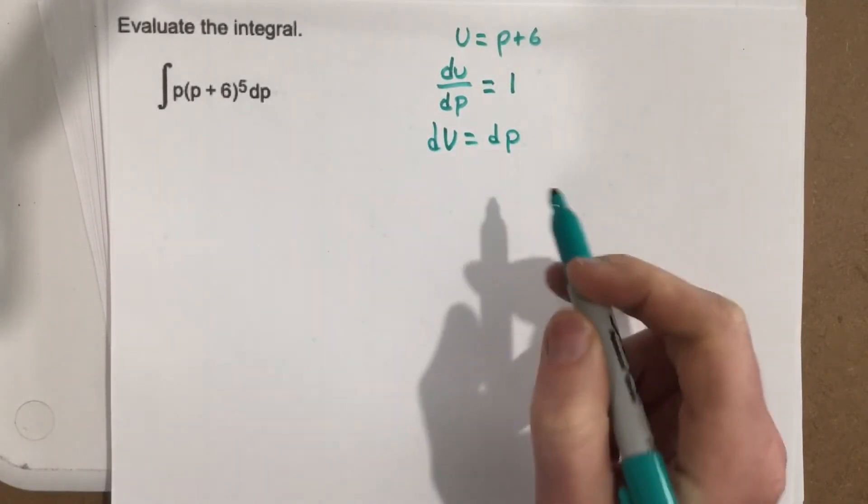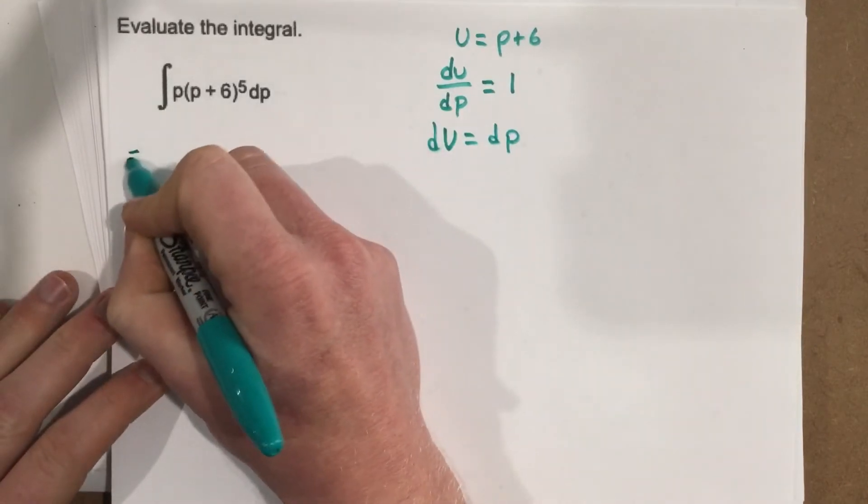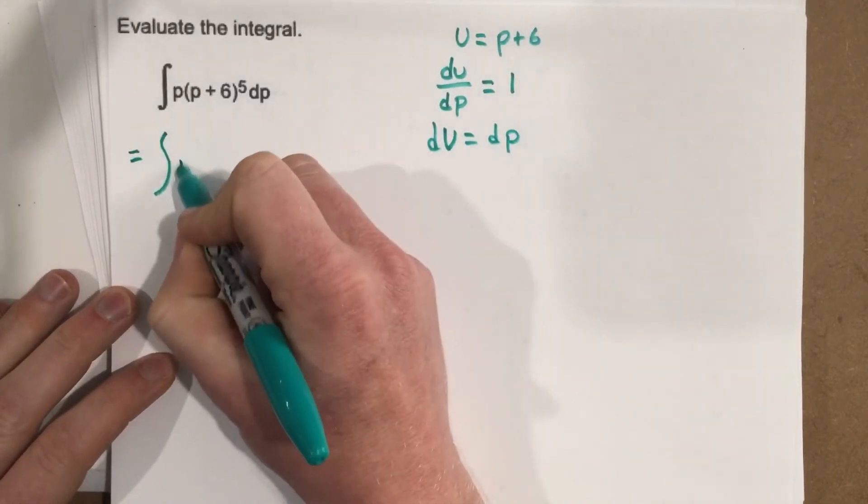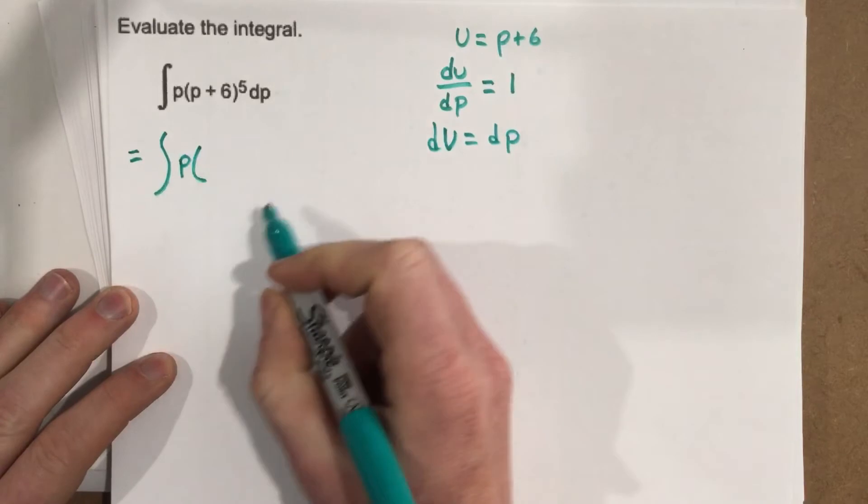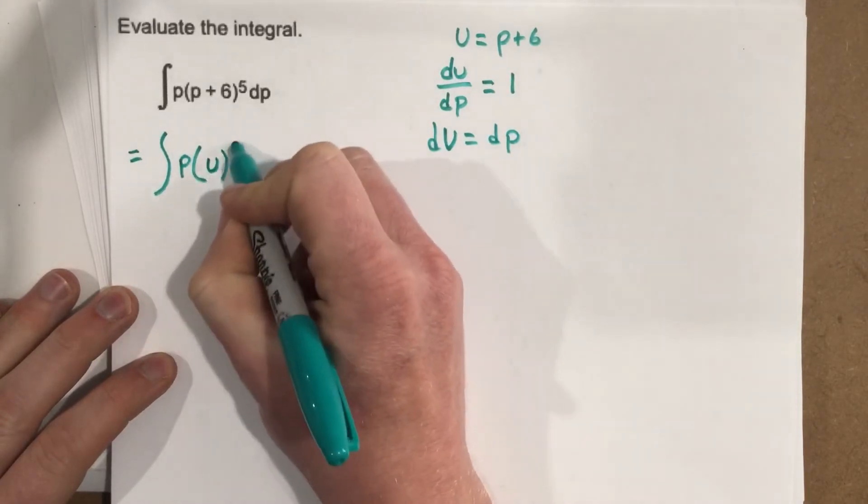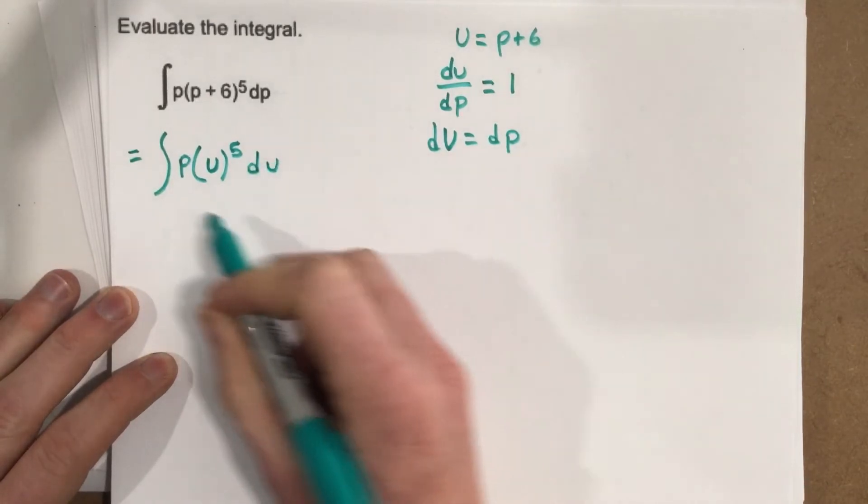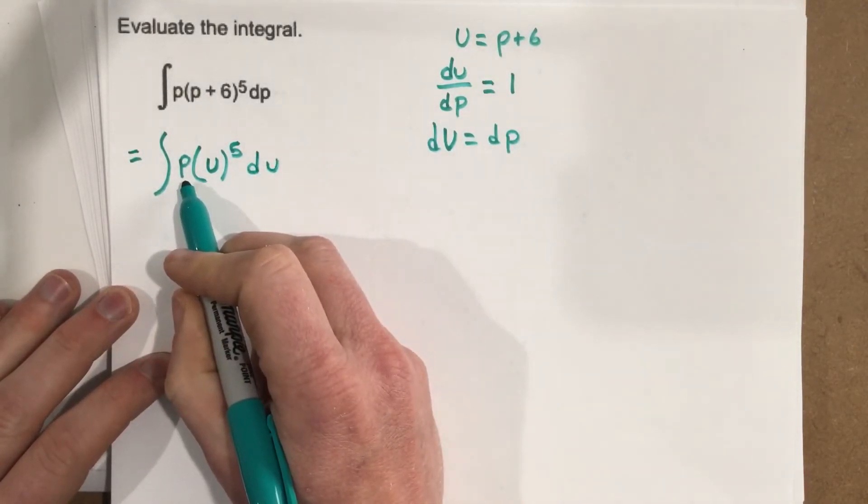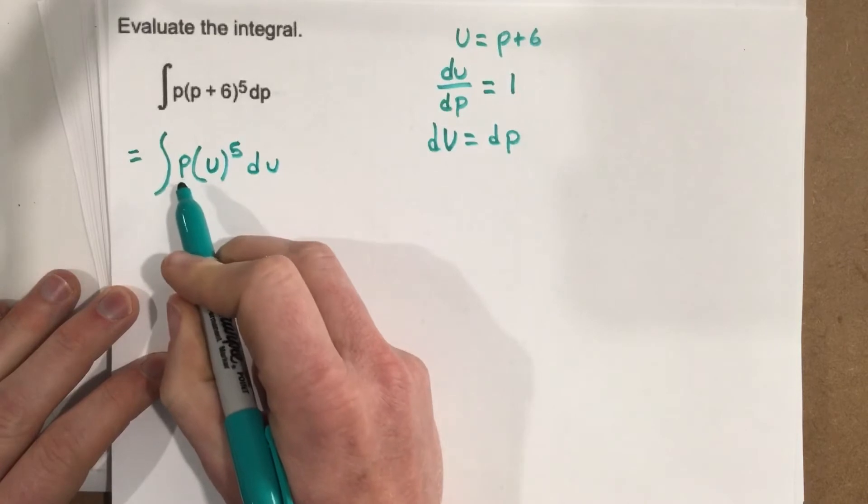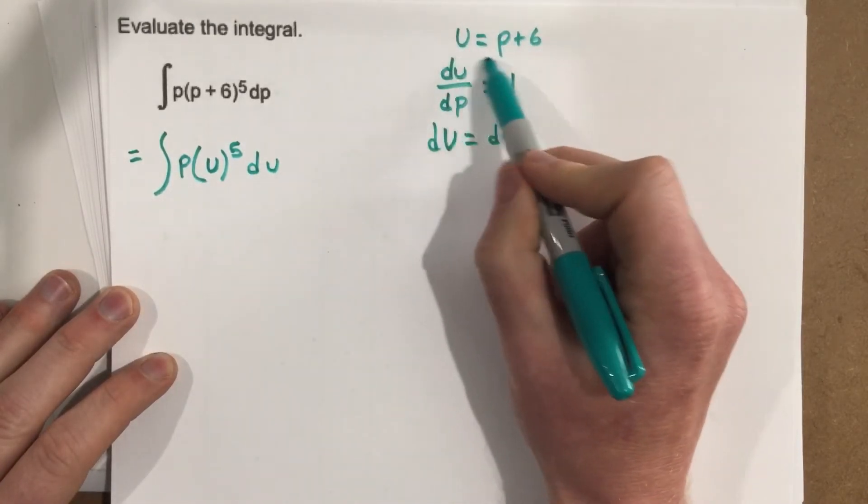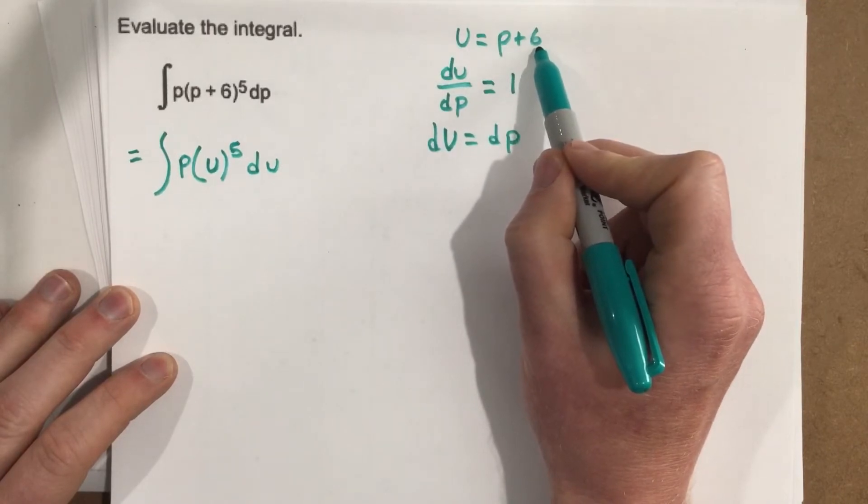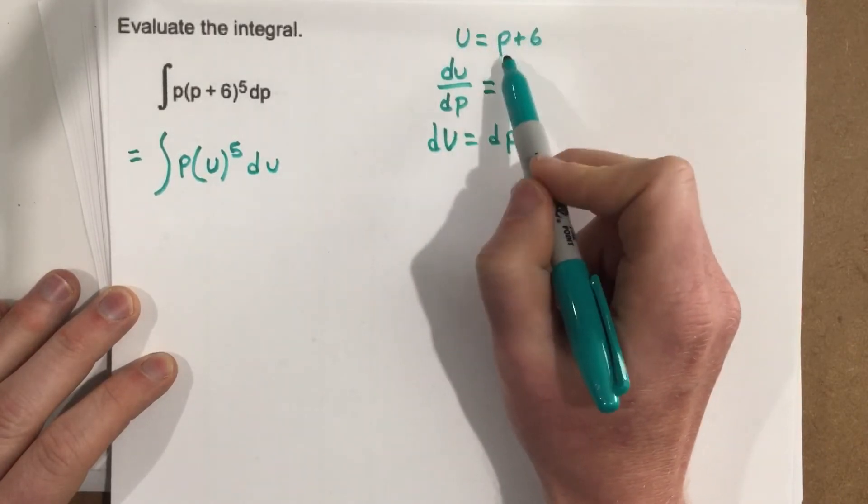When we plug this in, we get p times u to the 5th. If I substitute the dp with du, you can see we have a problem because we still have a p in here. So how can we get that p to not be in here? Well, we wrote an expression up here, u equals p plus 6. What if we use this expression and solve for p here?